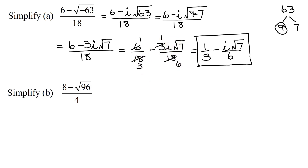The second example is 8 minus the square root of 96, all divided by 4. This has a similar format to my first example. And just like in the first example, I cannot reduce the 4 with the 8 because 8 is not a factor of the whole numerator.